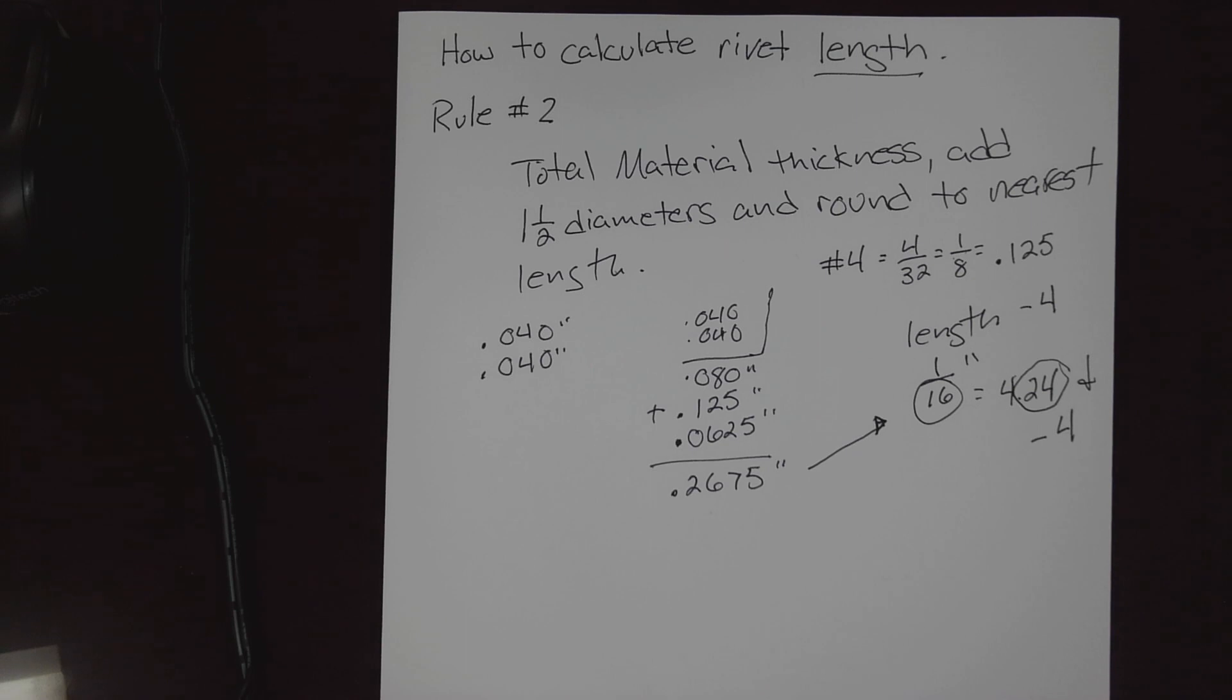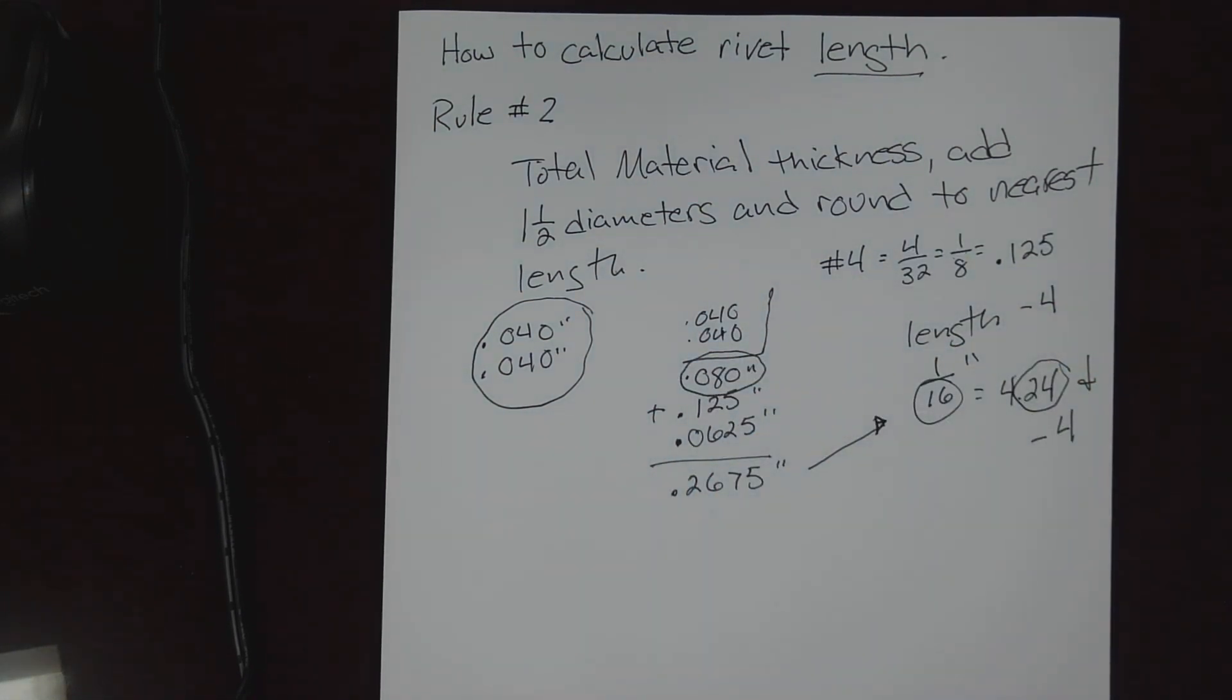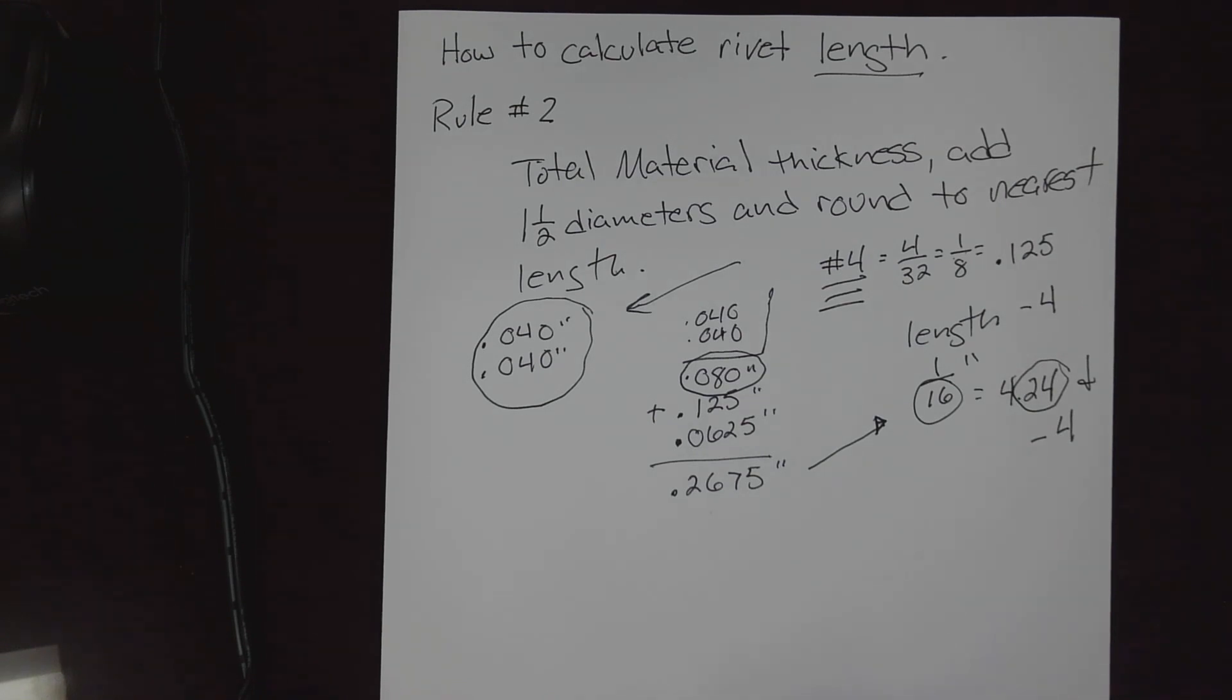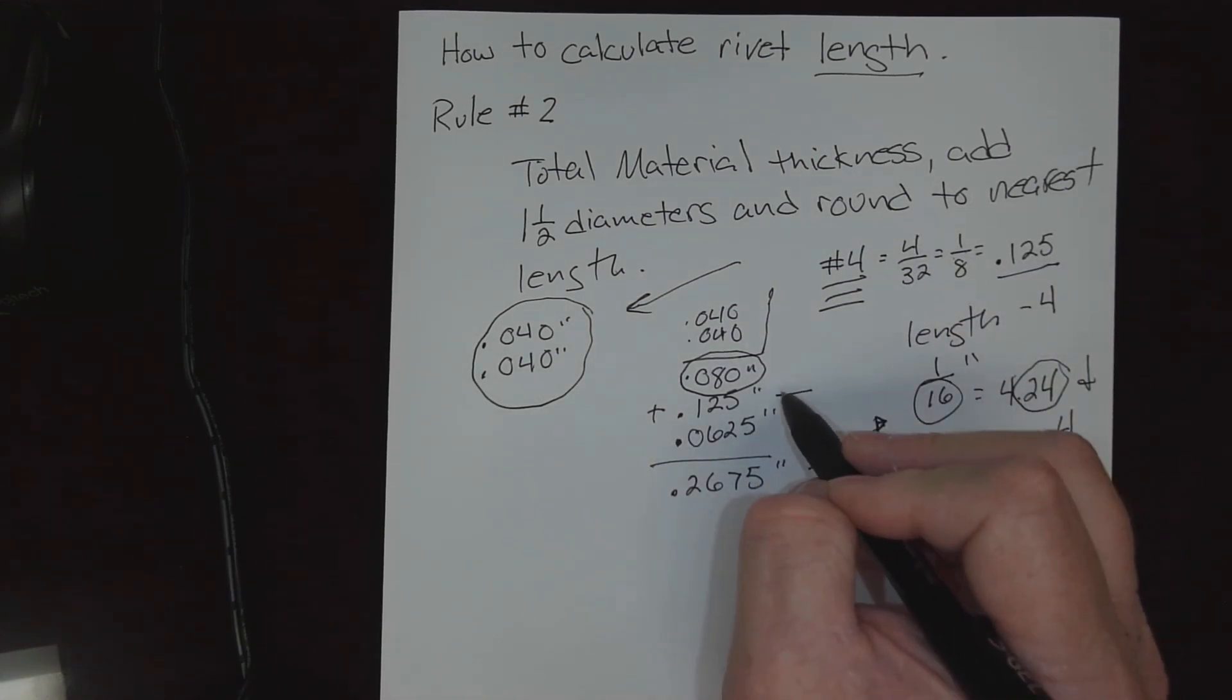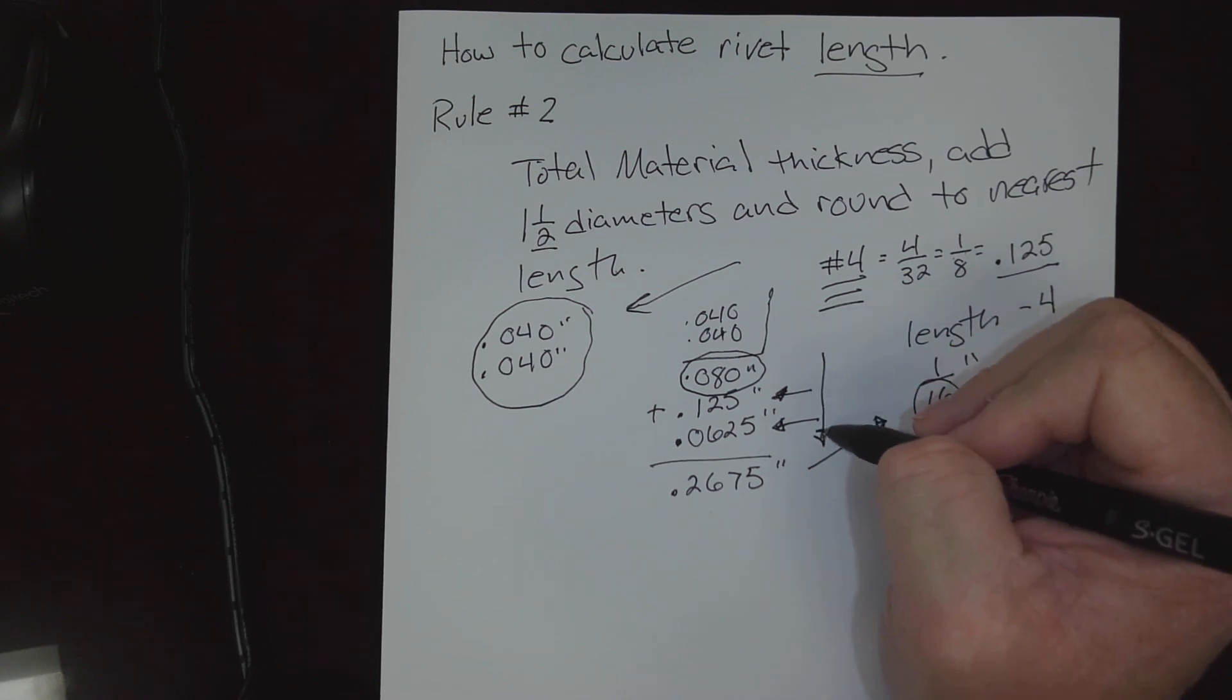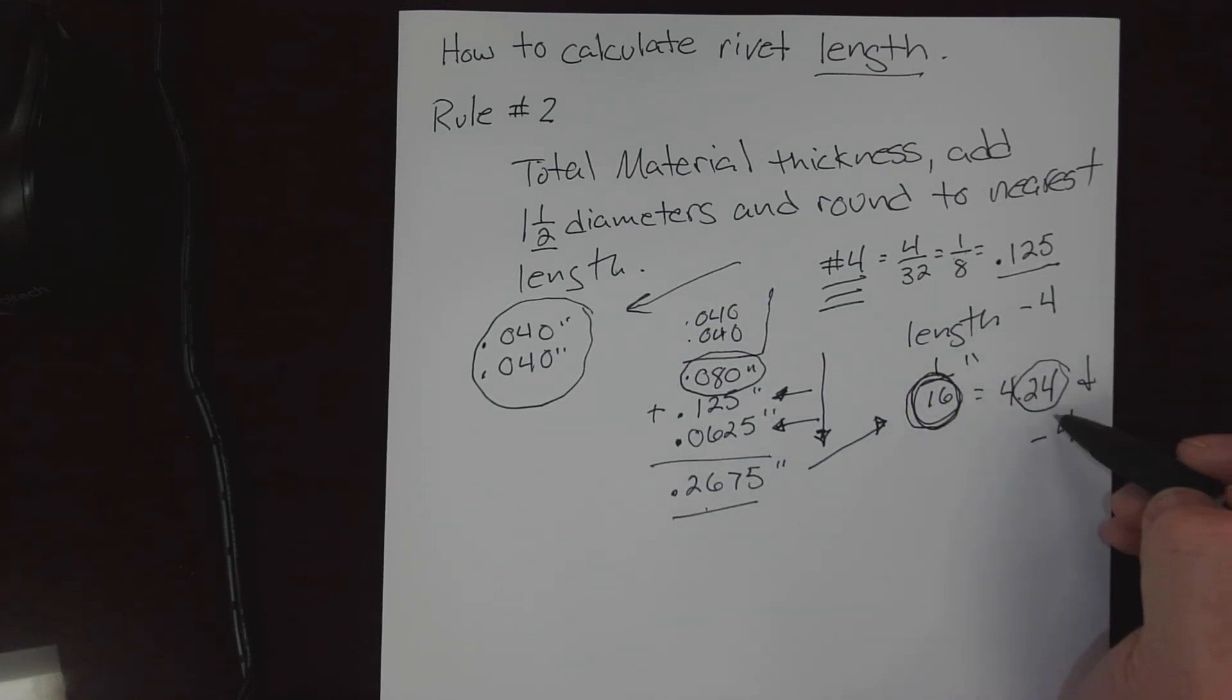Now let's take a minute and review what we've just done. We started with our total material stack up, added it to end up with 80 thousandths total. We took our diameter from Rule One in finding diameters, and we had determined a Number 4 was the right diameter for that stack up. So a Number 4, we could simply say 4/32nds, or you could divide them and come up to 125 thousandths. We added one diameter to our list, but the rule calls for one and a half, so we took that, halved it, and put that on our list. Then we simply totaled everything down to arrive at this number. We multiplied it by our desired denominator - lengths are always in 16ths - we come up to a 4.24, and in this case since it wasn't 4.5 or greater, we didn't go to a Number 5, we rounded down to a dash 4 rivet.